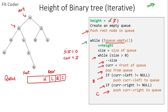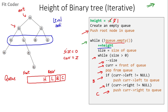At this point, all elements of one level are in the queue — the elements of level 2 are H, L, B, C. Whenever we change the level, we increment the height. This is similar to level order traversal — we are traversing the tree in level order, and at each level we increment the height variable.